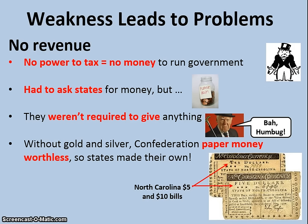However, as we predicted in Lesson 11, this new government with some of its weaknesses was probably going to run into some problems, and sure enough it did. The first problem: no revenue. This new government had no power to tax, which meant it had no way to raise money to run the government. They could go to the states to ask for money, but the states were not required to give anything to the national government.